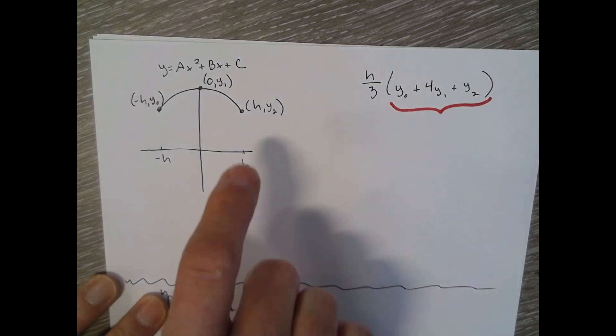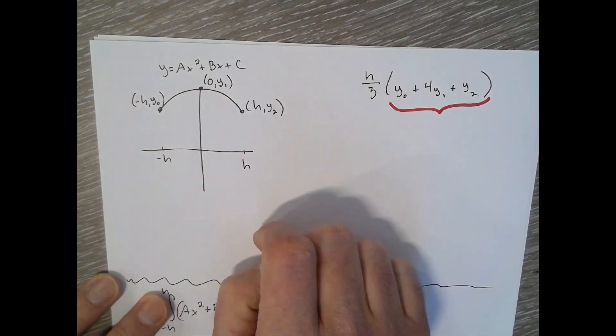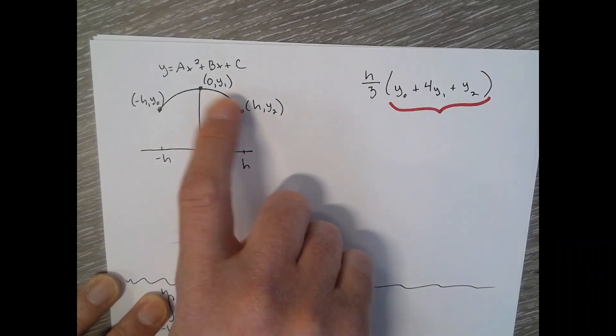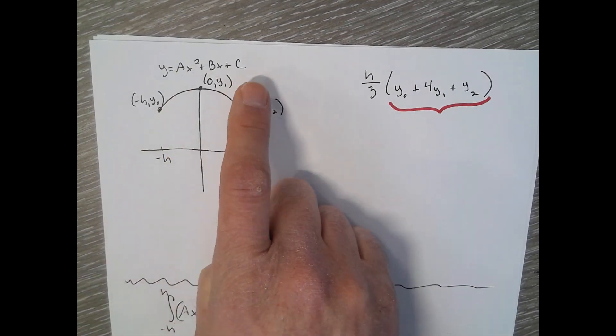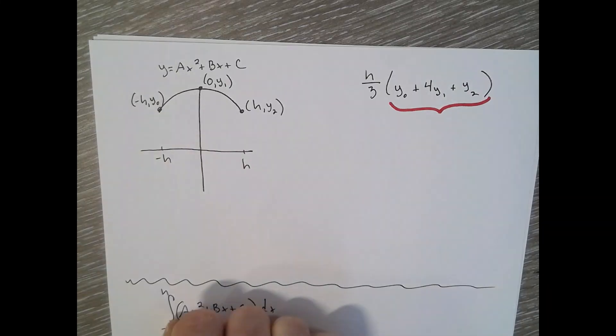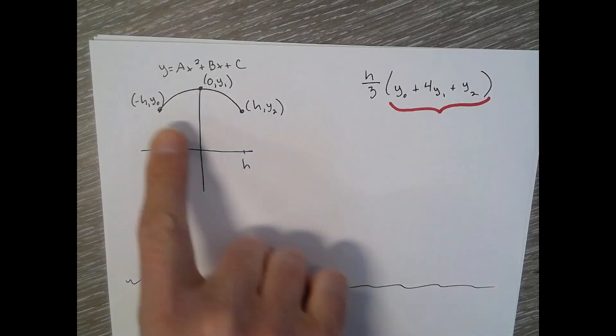So we've got a parabola. It's of the form y equals ax squared plus bx plus c. We've got three ordered pairs. We're going from negative h to h, finding the area underneath the curve. That's our goal.